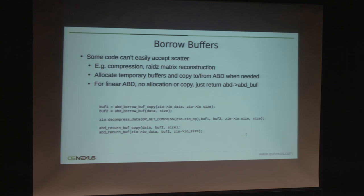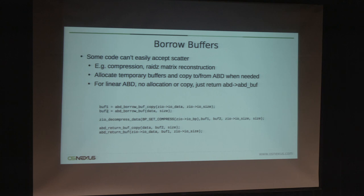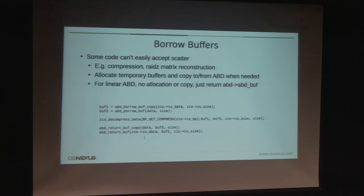Some code is hard to modify to accept scatter-list buffers — for example, compression. For those situations, my approach is to temporarily allocate normal buffers, copy data between ABDs and the buffer, and do the real work on linear buffers. For example, for decompression from IO data to data, we borrow buffer one for the IO data and buffer two for the data, decompress using those buffers, and after finishing, free the buffer and copy the data back to the ABD.